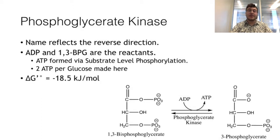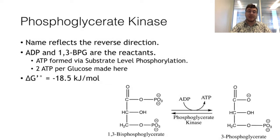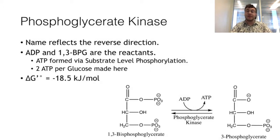The seventh step is catalyzed by phosphoglycerate kinase. This reaction is highly favorable and creates an ATP molecule by extracting a phosphate from 1,3-bisphosphoglycerate. This is considered substrate-level phosphorylation, since ADP is required as a substrate for this reaction to proceed and will not occur unless ADP is within the active site. This enzyme is named for the reverse reaction, hence the name kinase.